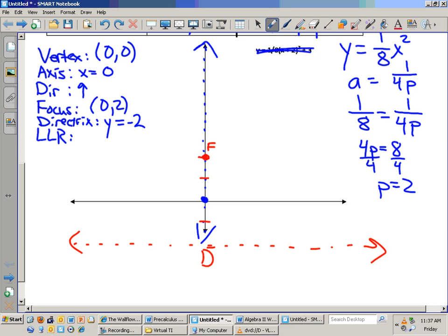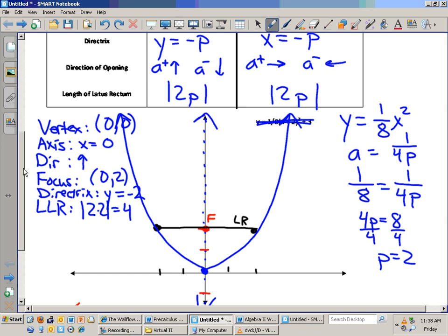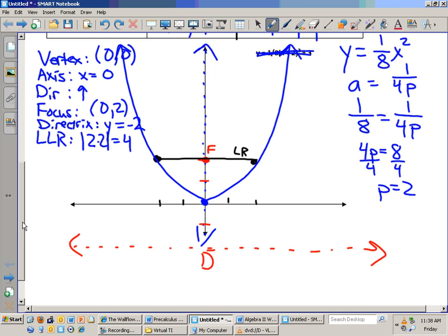The length of the latus rectum is the absolute value of twice the P value, which is what? 4. The absolute value of 2 times 2 is 4. And what is that? The length of the latus rectum is simply this. It's a segment that goes through the focal point that spans the distance of the parabola. So watch. If I go two units this way, if I go two units this way, you can see that I have this segment. That is my latus rectum. And the actual graph then goes from the vertex through the endpoint of the latus rectum. Just like so. Well, my formula says that the length of the latus rectum is the absolute value of 2P. And that's it. That's what we're learning today.